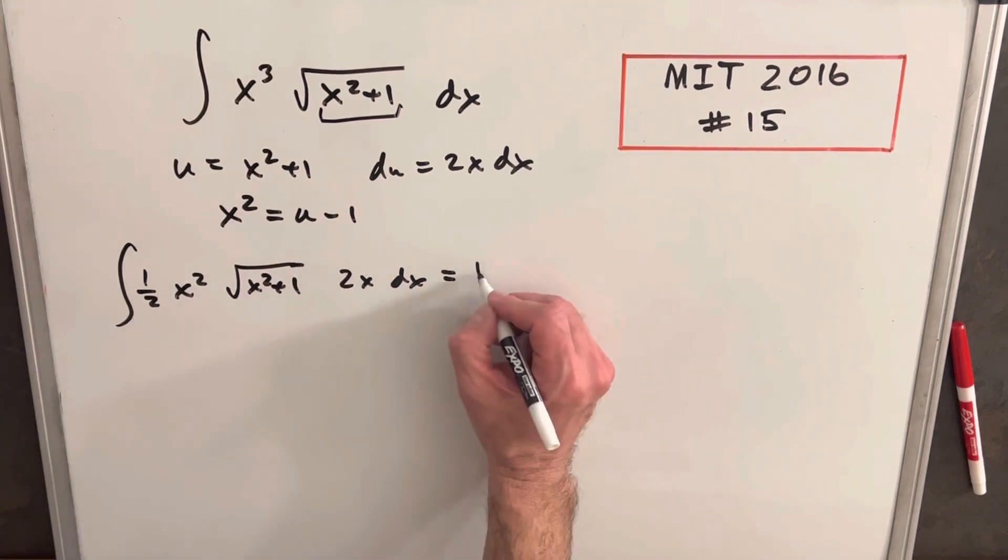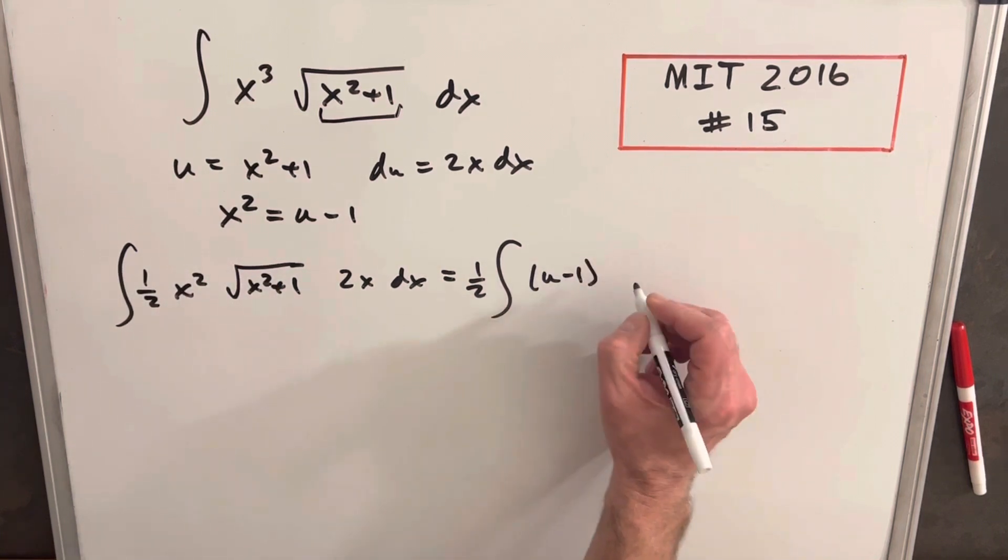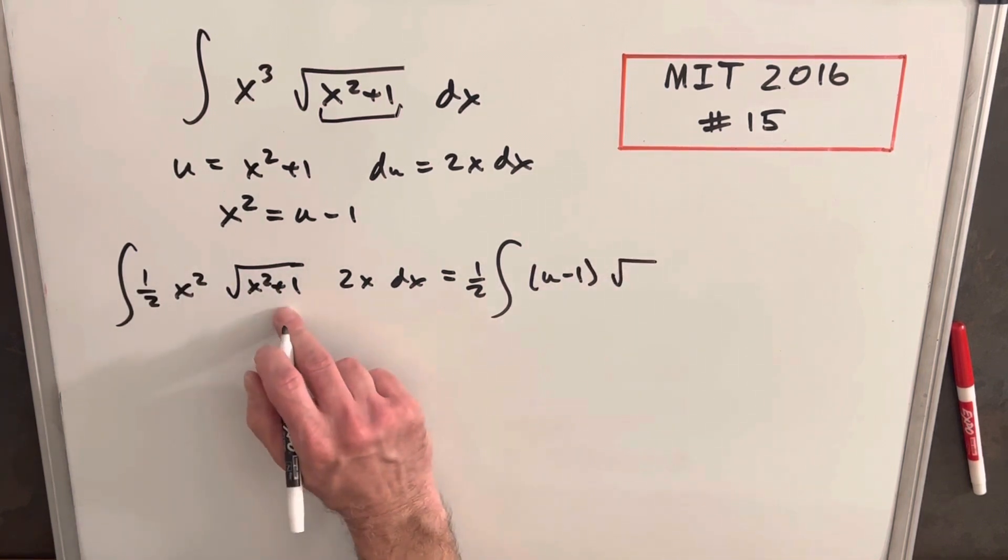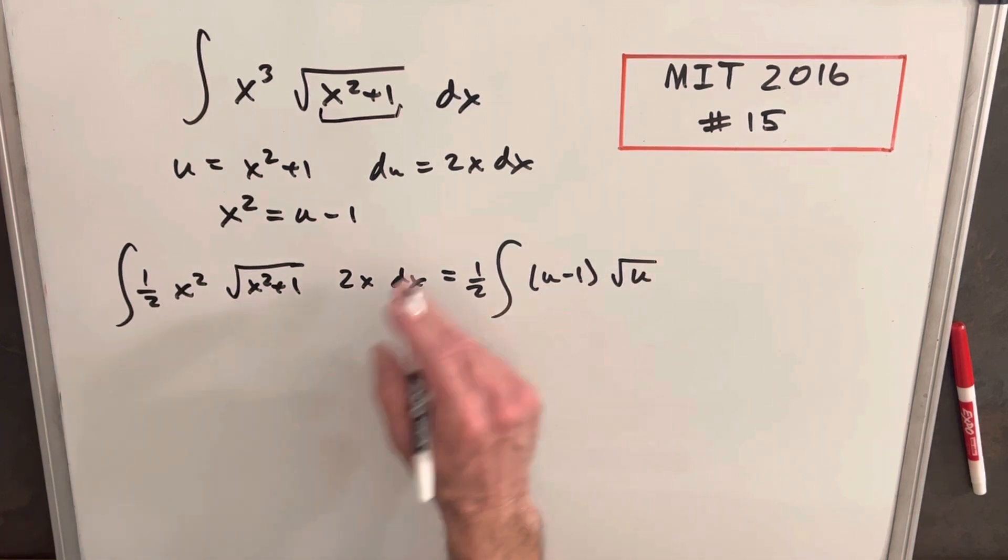So I'll bring a half out front. Our x squared is going to be u minus 1. This is going to be square root of u. And then here, 2x dx is just du.